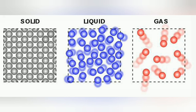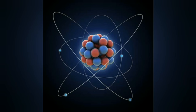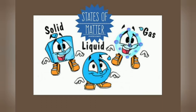Matter is classified as solid, liquid, and gas based on physical state. Matter is made up of tiny particles — atoms and molecules — and these particles are in constant random movement. Let us look at the characteristics of solid, liquid, and gas. When the arrangement of the particles of a substance changes — for any reason, such as applying pressure, change in temperature, or other reasons — the physical state of the substance gets changed.